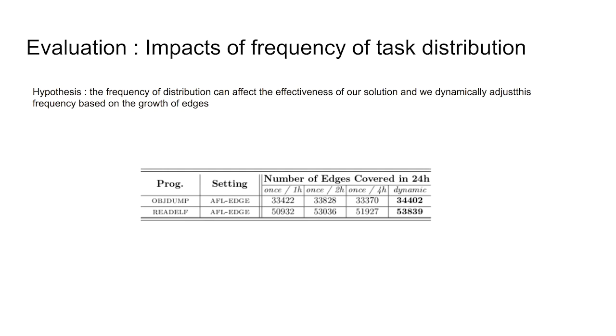To validate our hypothesis that the frequency of distribution can affect the effectiveness of our solution and demonstrate our dynamic approach, we perform another experiment where we run one round of distribution per one hour, per two hours, and per four hours. In this table, it shows that the frequency of distribution truly makes a difference and our dynamic adjustment indeed outperforms the solution with a fixed frequency.